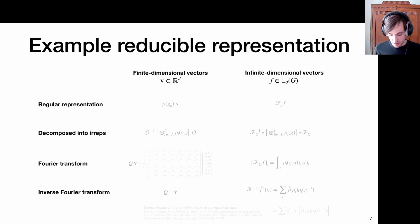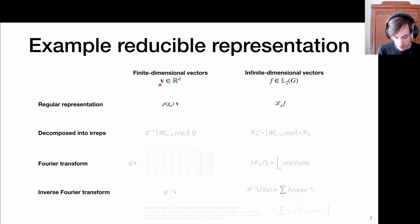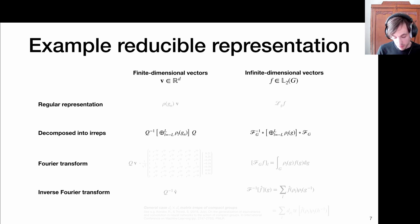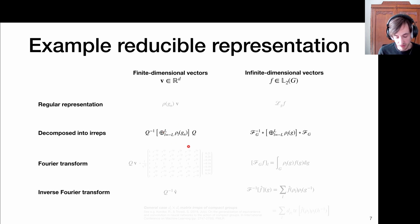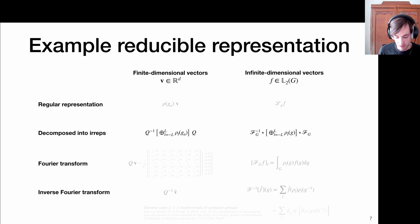To summarize: on one side we have finite-dimensional vectors or infinite-dimensional vectors representing continuous signals. We have a regular representation corresponding to some permutation of elements. If we have matrix representations, we can apply a change of coordinates via matrix Q such that the representation is described via a block-diagonal matrix corresponding to blocks of irreducible representations. This Q applies the change of basis and can be thought of as a Fourier transform that puts the signal into a basis transformed via these block-diagonal representations.